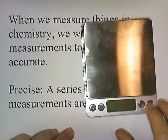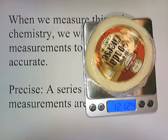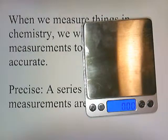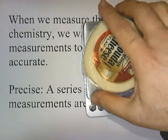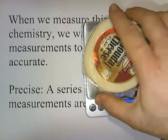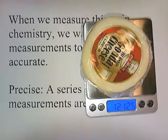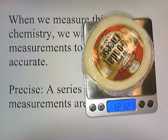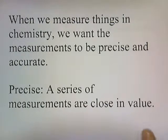For example, suppose I have a scale and I weigh something. If each time I put something on the scale, we should get about the same value every time we weigh it. So notice every time I put this on the scale, I get something close to 121.2. Each time we weigh it, we get something close to the same value. So a series of measurements are close in value.